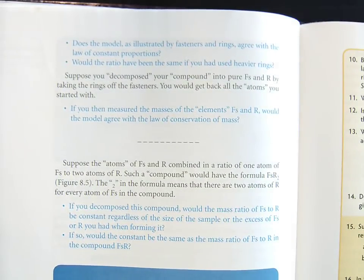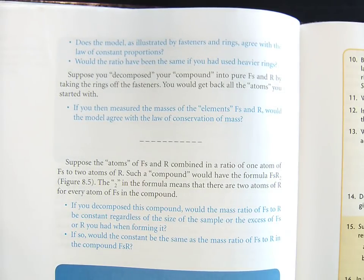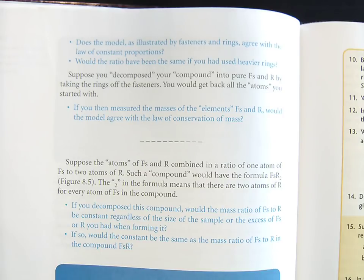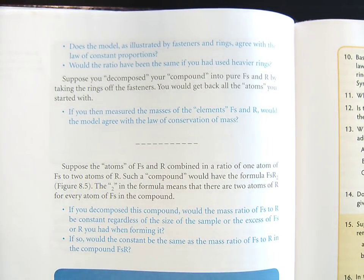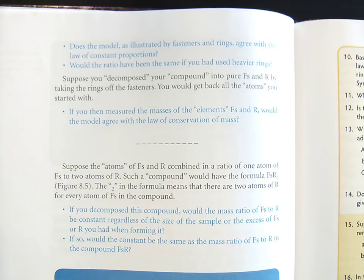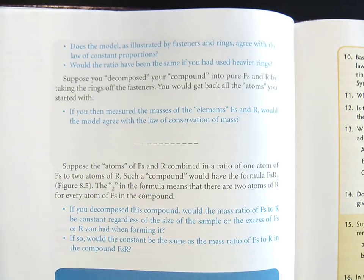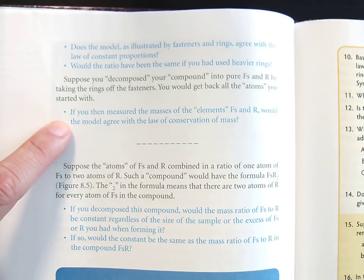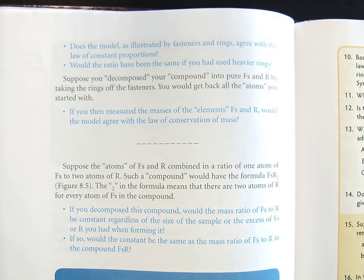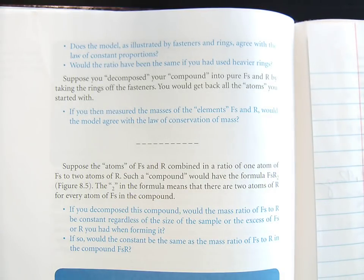Does the model, as illustrated by fasteners and rings, agree with the law of constant proportions? Yes, it absolutely does. Would the ratio have been the same if you had used heavier rings? No — if the mass of the rings is greater, it's going to make our ratio different. That's why you have to understand how the mass of each element is different. Suppose you decomposed your compound into pure fasteners and rings by taking the rings off. Would you get back all the atoms you started with? Yes, absolutely, because none of them disappear. The amount I start with is exactly the amount I get back — again, the law of conservation of mass. Would the model agree with the law of conservation of mass? Yes, it definitely agrees with both the law of conservation of mass and the law of constant proportions.